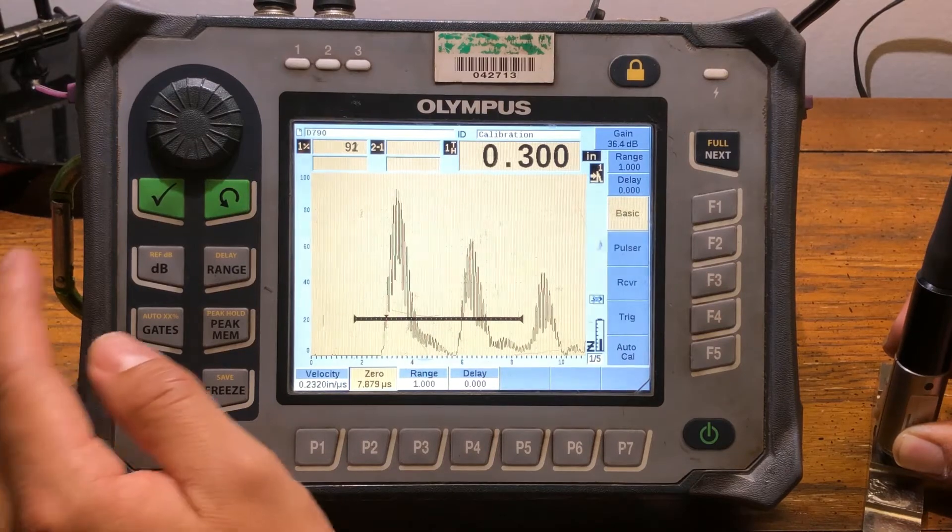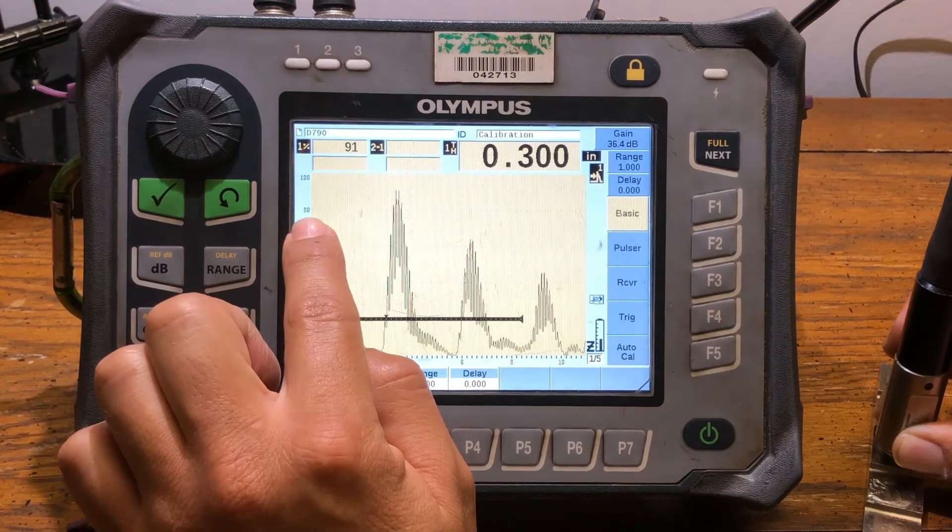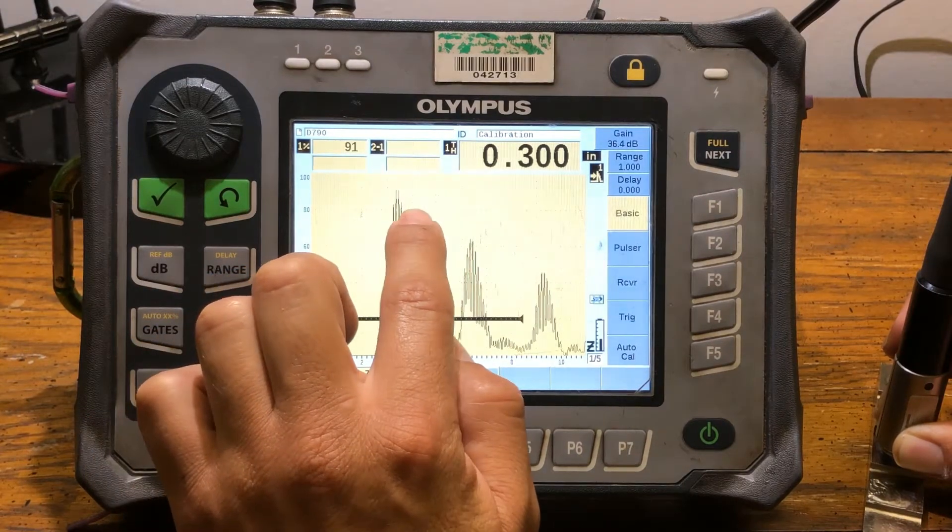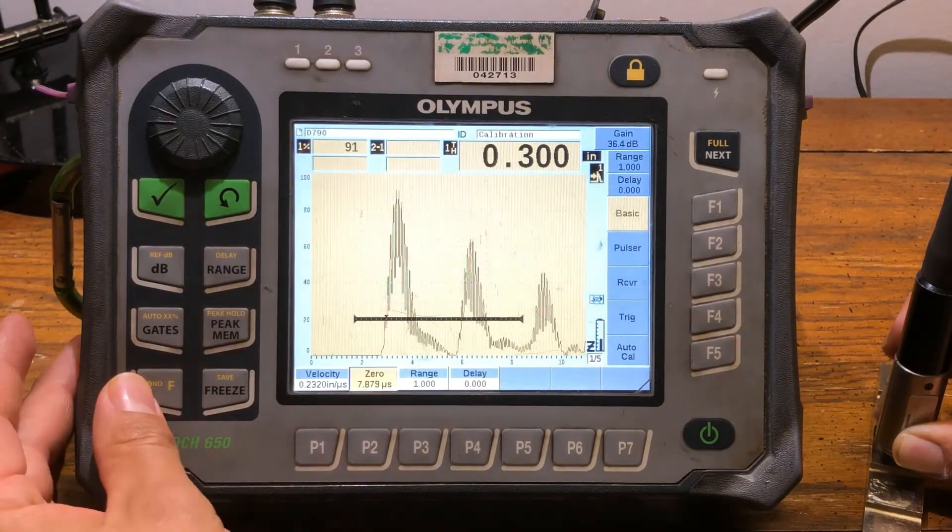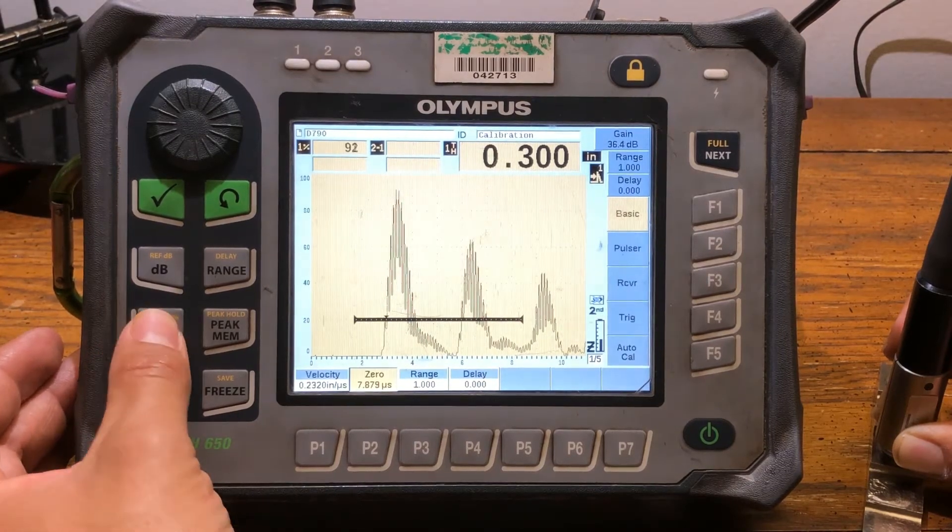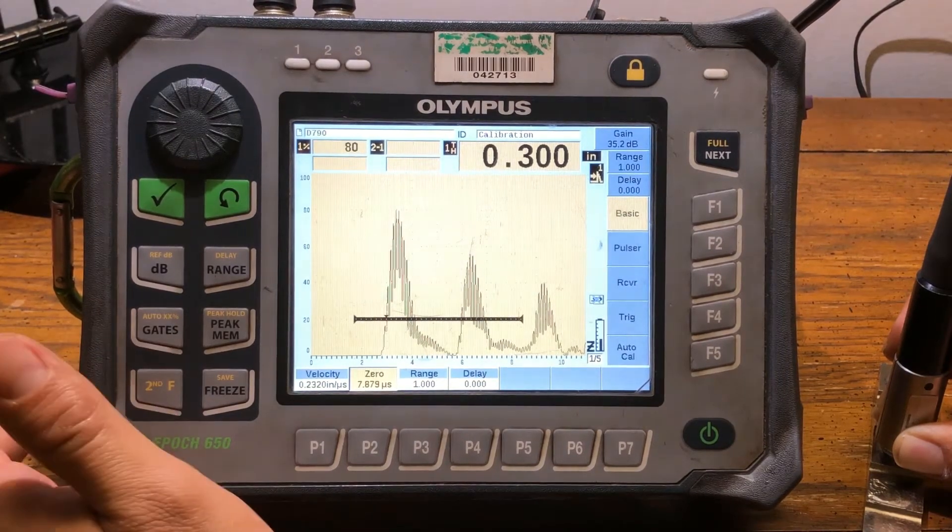So it's very important that you actually have your peaks at 80 DB. To do that, you can just hit second function and auto 80, or gate, and it will put it right where you should be.